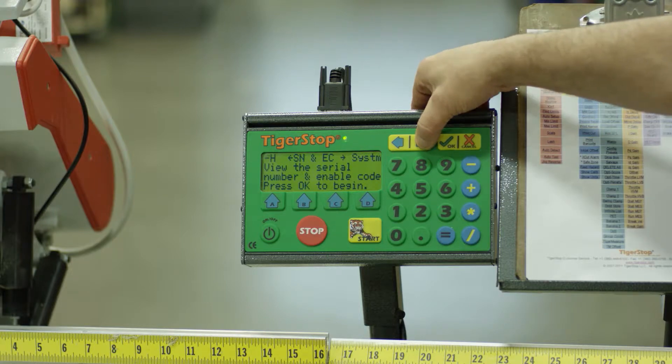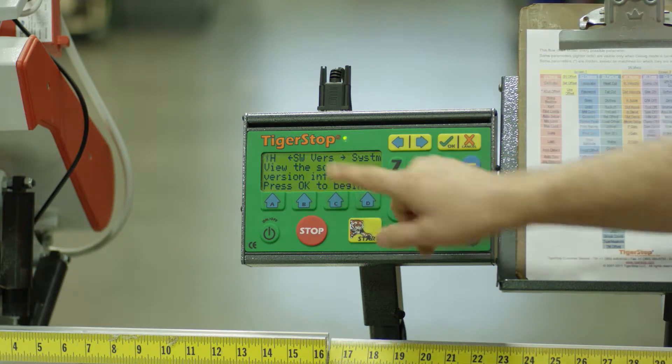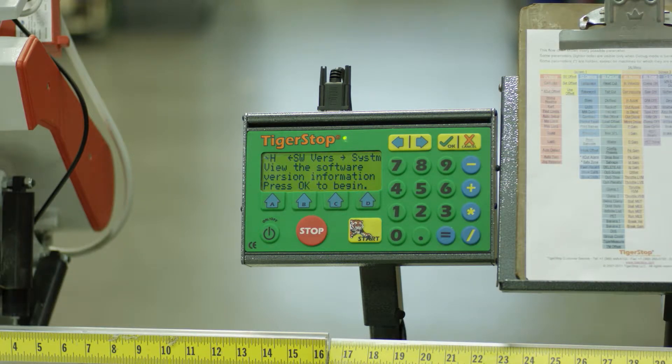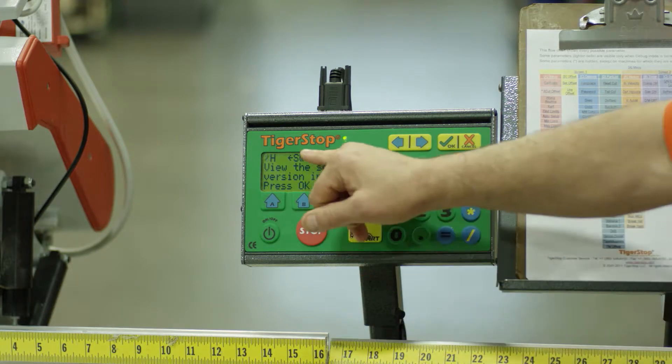I'm going to right arrow until I see SW version, V-E-R-S. That is my software version.